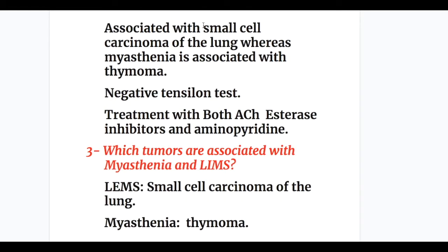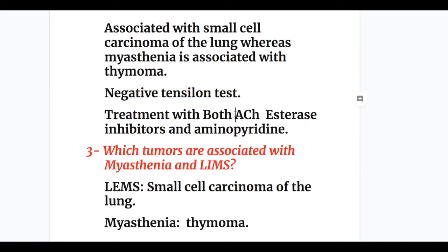LEMS is associated with small cell carcinoma of the lung, whereas myasthenia is associated with thymoma. The Tensilon test is negative in LEMS, whereas it is positive in myasthenia. Treatment for LEMS uses both acetylcholinesterase inhibitors and aminopyridine, whereas treatment for myasthenia uses acetylcholinesterase inhibitors.